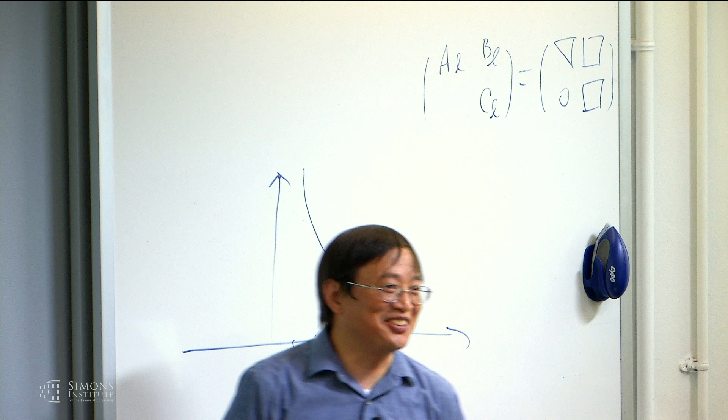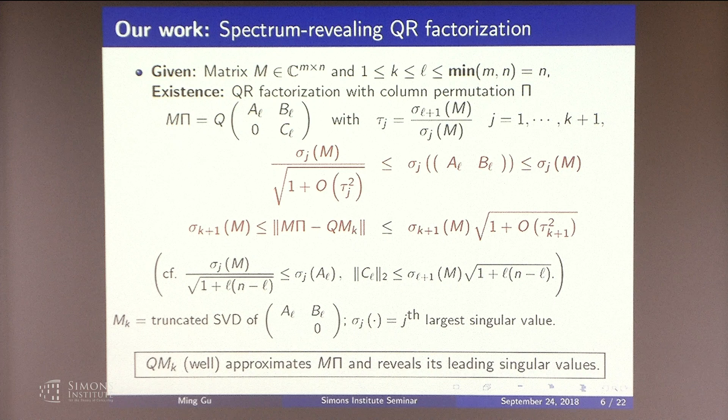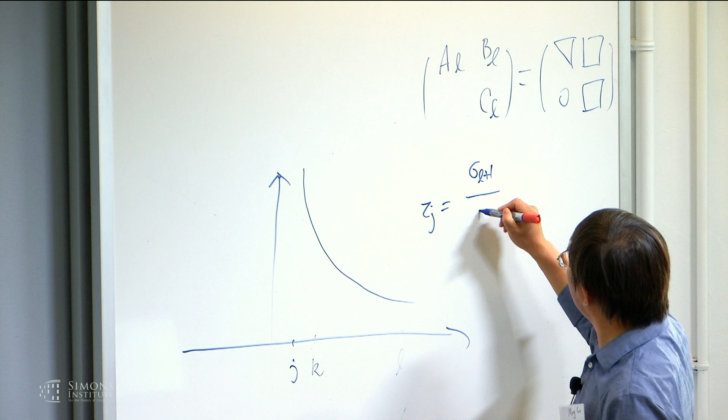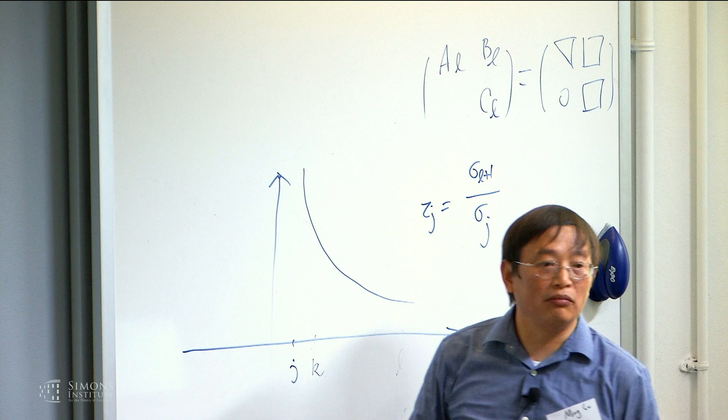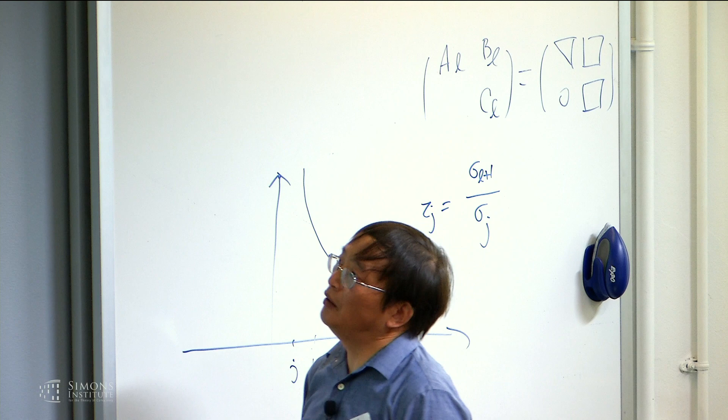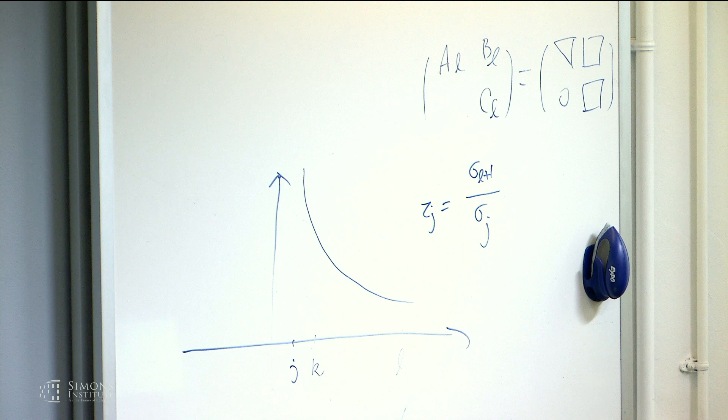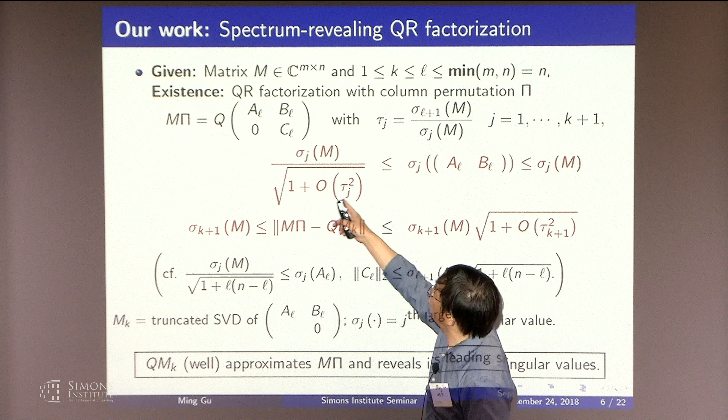So we are looking at this tau j ratio, which is going to be sigma L plus 1 over sigma j. And you see that if you have a gap in between K and L, then you would expect this ratio to be reasonably small. It's not zero, but hopefully it's reasonably small. So that's why we hope that if this is small, then we can hope for this to be reasonably small as well.